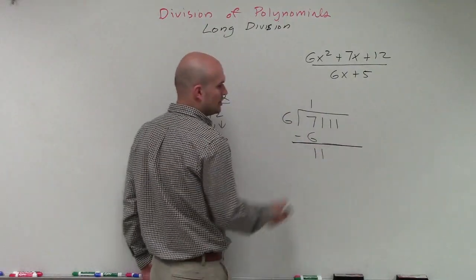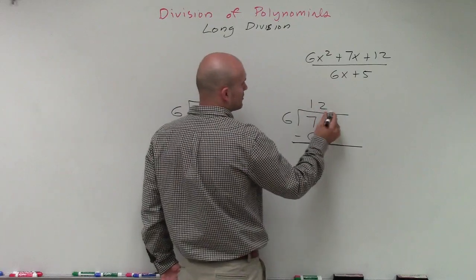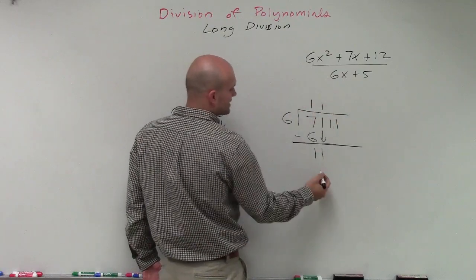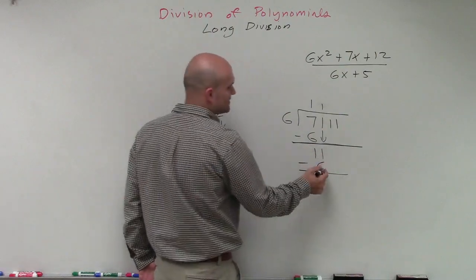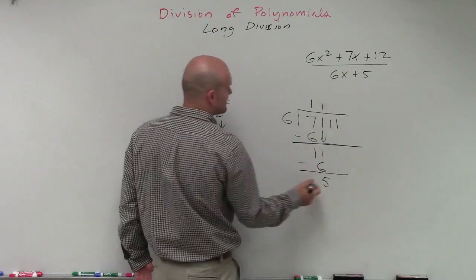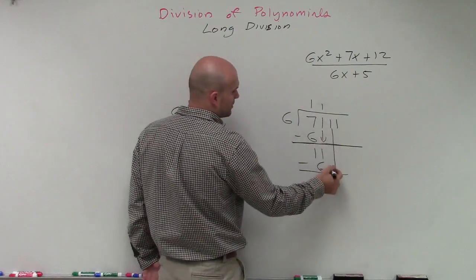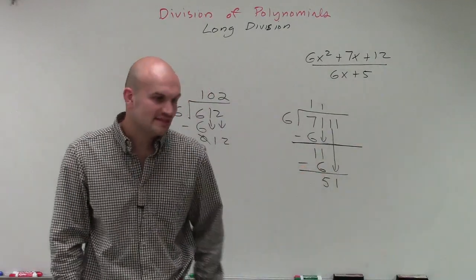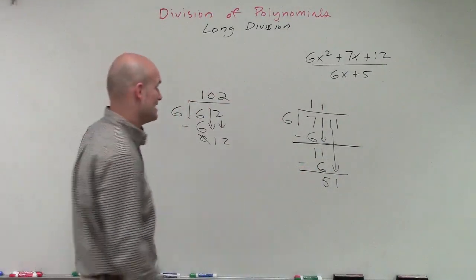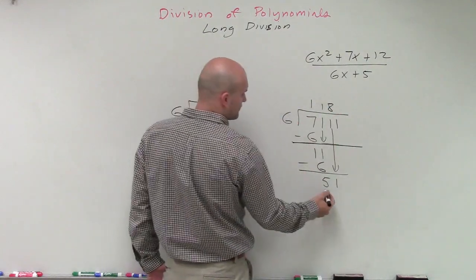Bring down the next one. So 6 divides into 11 one time. 1 times 6 is 6. Then, again, we subtract the rows. 11 minus 6 is going to be 5. 6 is not divided into 5, but it's still in this row. So we bring down the next one. 6 divides into 56. Let's go and see, 8 times. So we're going to put an 8 up there. Now 8 times 6 is 48.